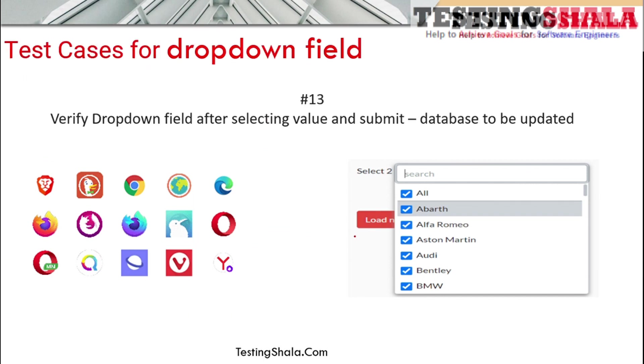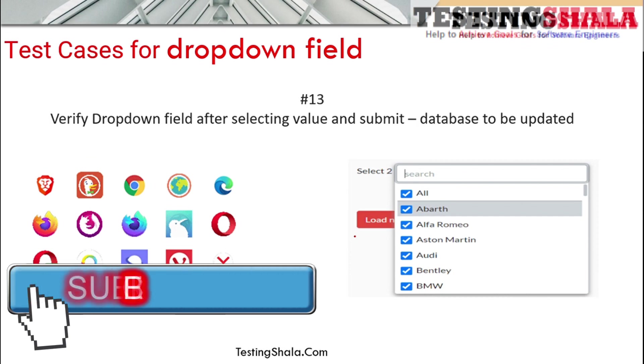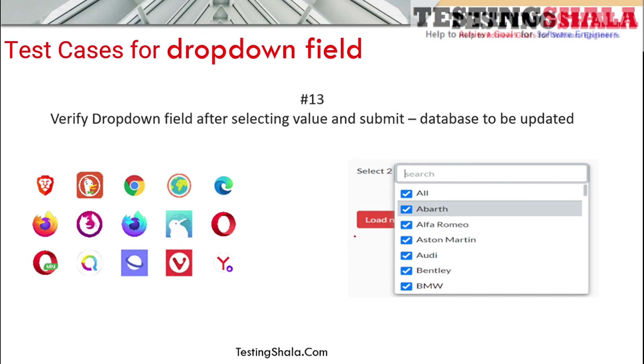Also validate database behavior: after performing an operation on the dropdown and clicking Submit or doing a commit operation, the data should be saved into the database. Ensure that whatever data is selected in the dropdown, the same data goes into the database. Also verify the reverse — if you change data in the database, it should be reflected in the UI.